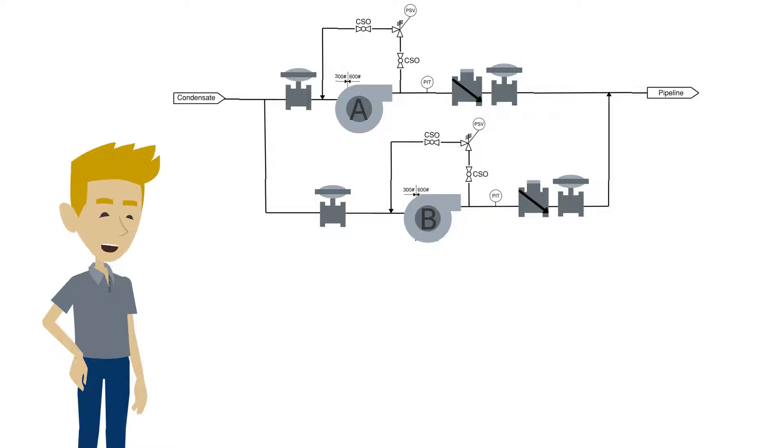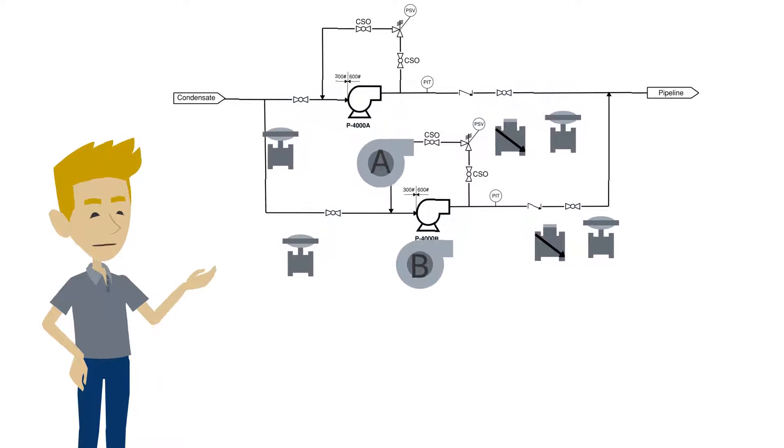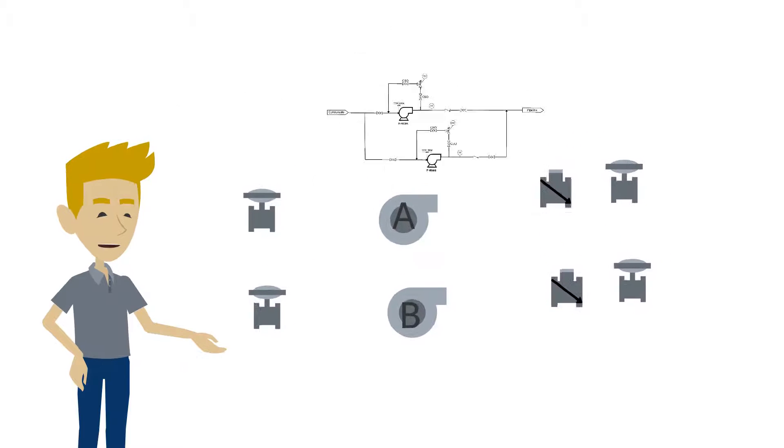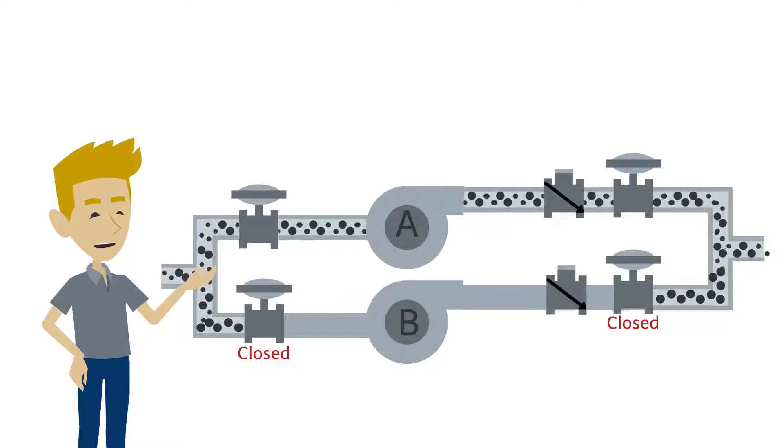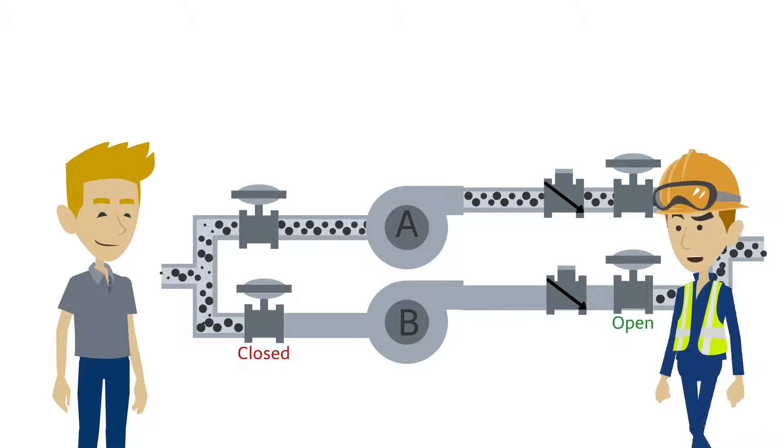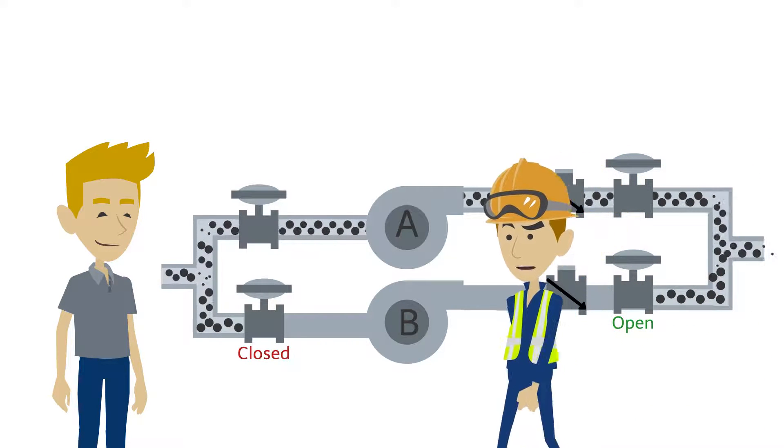With the new project to increase our production rates, we needed to turn pump B on in addition to pump A, which we have been running continuously. When you went to start up the pump, you opened the downstream valve. I had not yet opened the valve upstream of the pump when it started to leak.